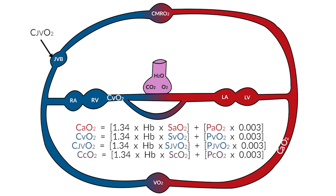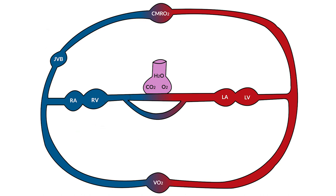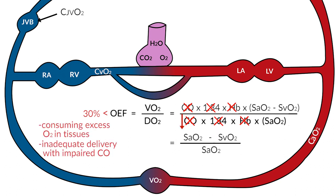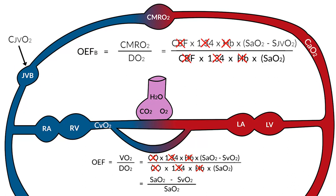And the way we often do this is by measurement of something called a mixed venous saturation. As you recall, as we went through the formulas for content of oxygen at various points in the circulation, if you were to sample the oxygen saturation here in the pulmonary artery, you'd have a mixed venous sat. Another way to express oxygen extraction fraction is your arterial sat minus your mixed venous sat divided by your arterial sat. And if your oxygen extraction fraction is excessively high — greater than 30% — that tells you that you're either consuming a lot of oxygen in the tissues or not delivering enough with an impaired cardiac output.